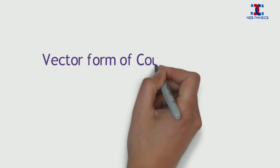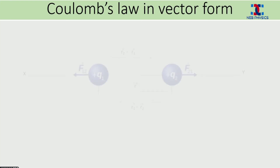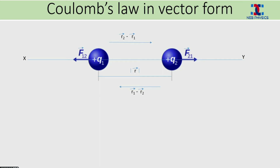Now let's discuss the vector form of Coulomb's Law. Here we not only consider the magnitude, but also the direction of force. We suppose two point charges, plus q1 and plus q2, separated by the distance modulus of R vector. Please note that distance is a scalar quantity, so we are representing it by the modulus of R vector. F1,2 vector is the force on the first charge due to the second charge, and F2,1 vector is the force on the second charge due to the first charge. The two charges repel one another along the line xy.